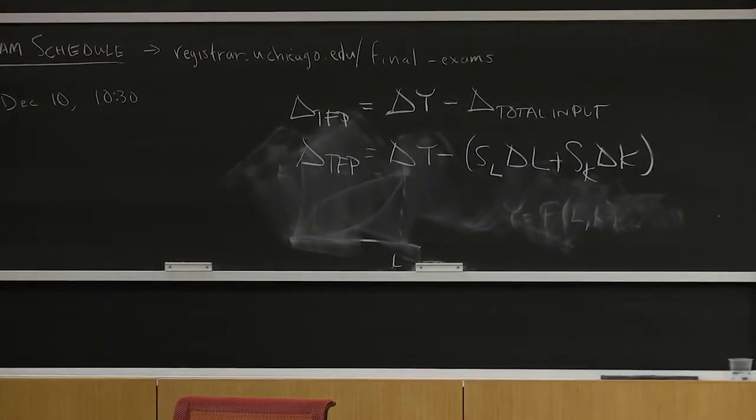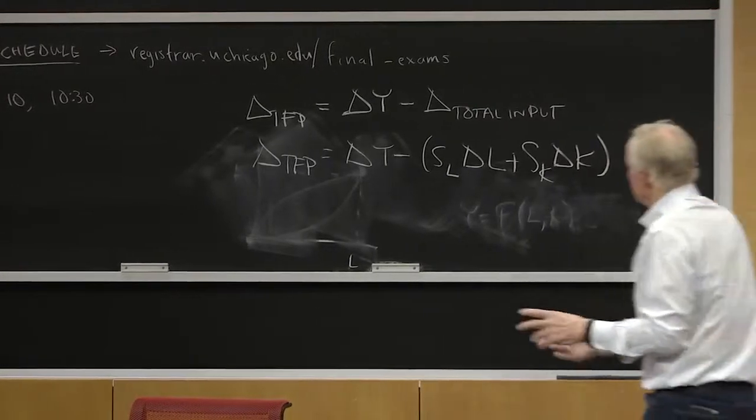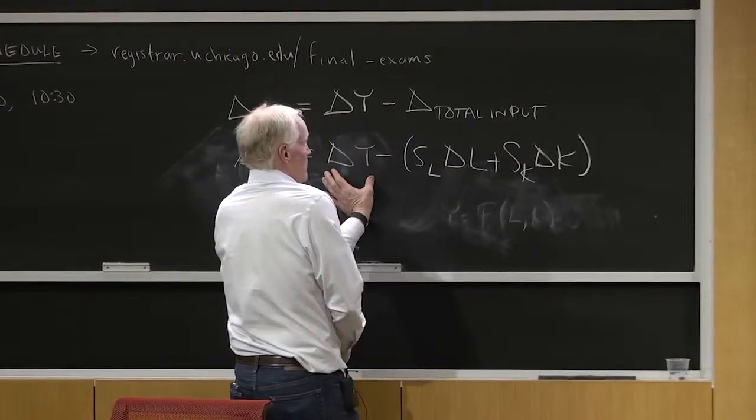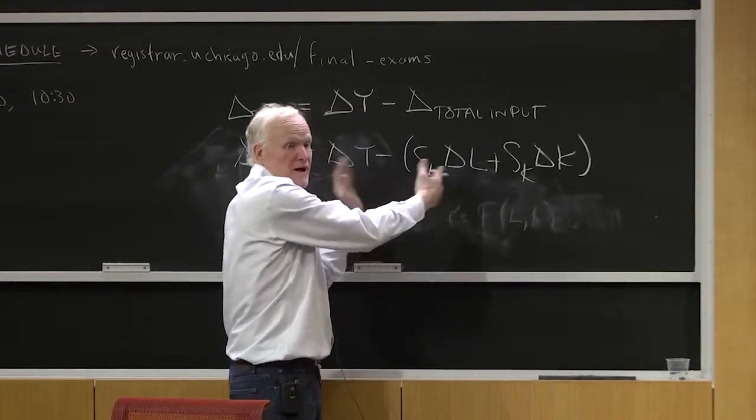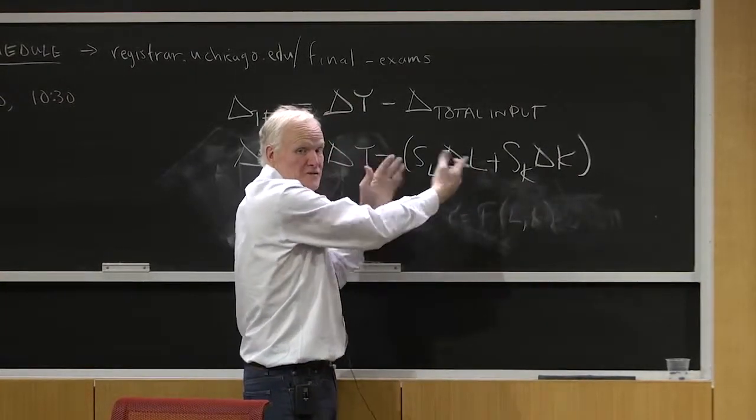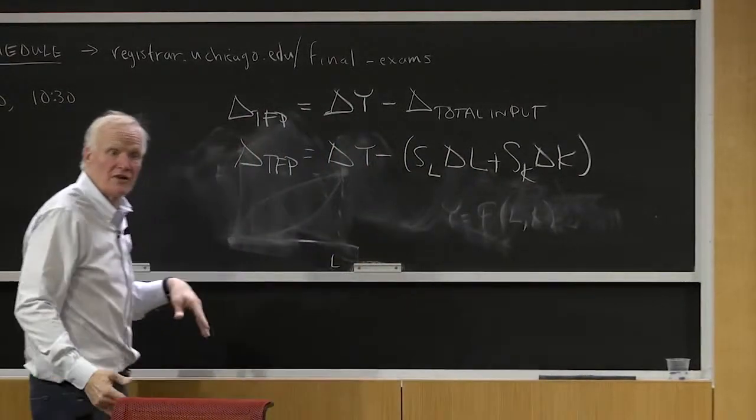So that's going to measure, but it's kind of the same idea, right? Because it's output growth minus input growth. Did output grow faster than input? If output grew faster than input, then we must have some technological progress.